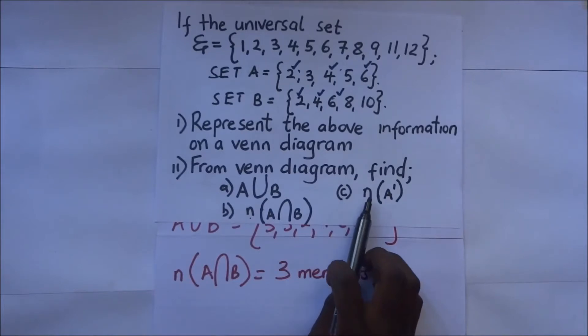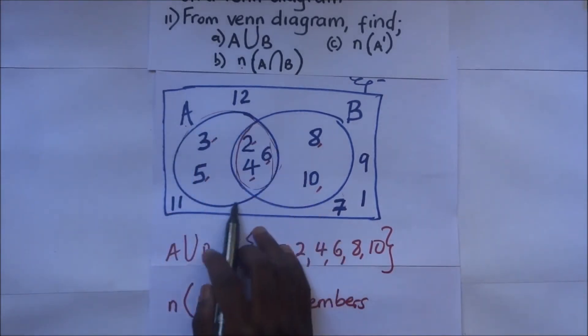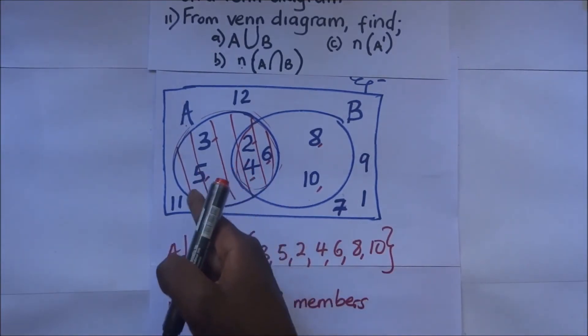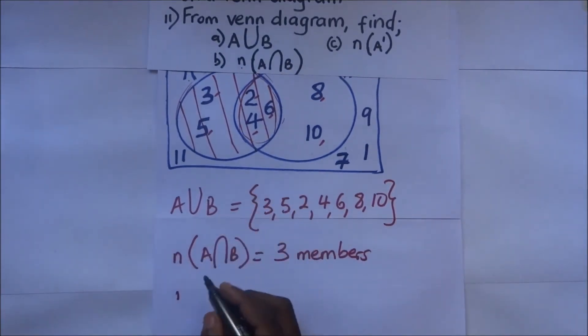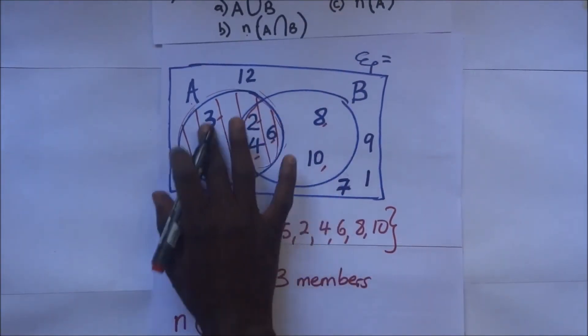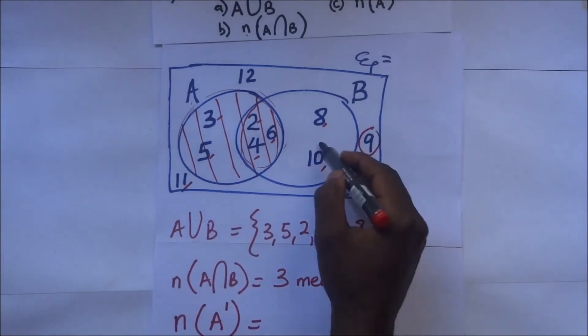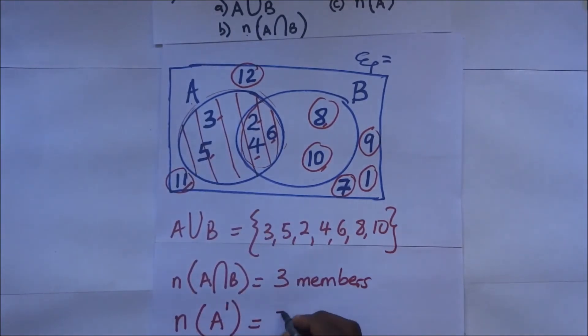Part C - they are telling us to find the number of members in A complement. When they say A complement, it simply means members that are not in A. If you look at set A, the circle for set A is this. All the members in set A are inside there. When they say set A complement, it means anything that is outside A. So we shall count whatever is outside A because that is what represents A complement, and that will be 1, 2, 3, 4, 5, 6, 7. So there are 7 members that are outside set A.